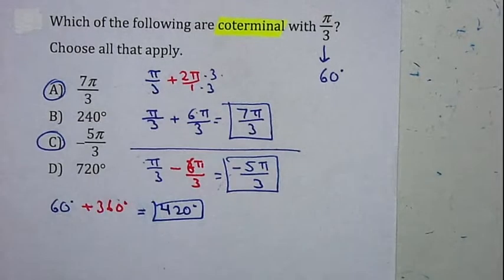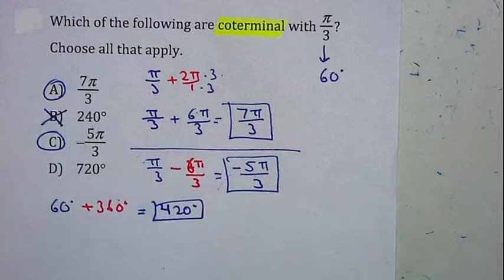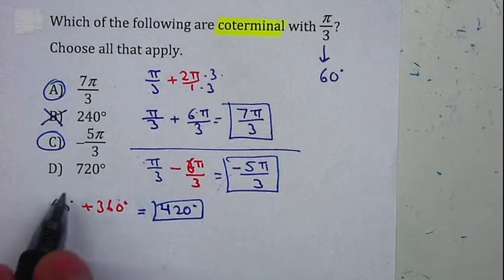And that was not it. So we know that 240 is not it. Because it got passed. It went from 60 to 420.